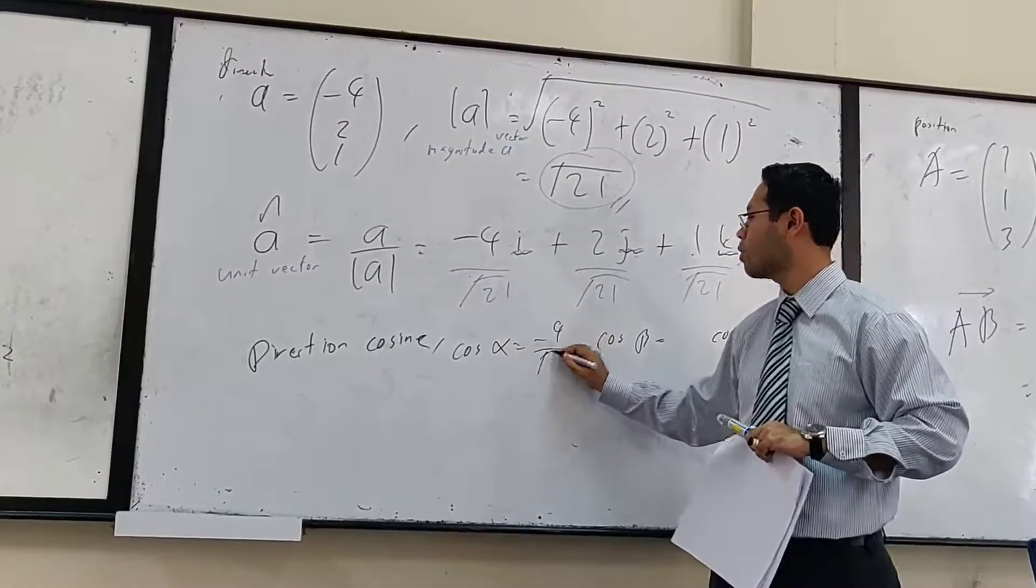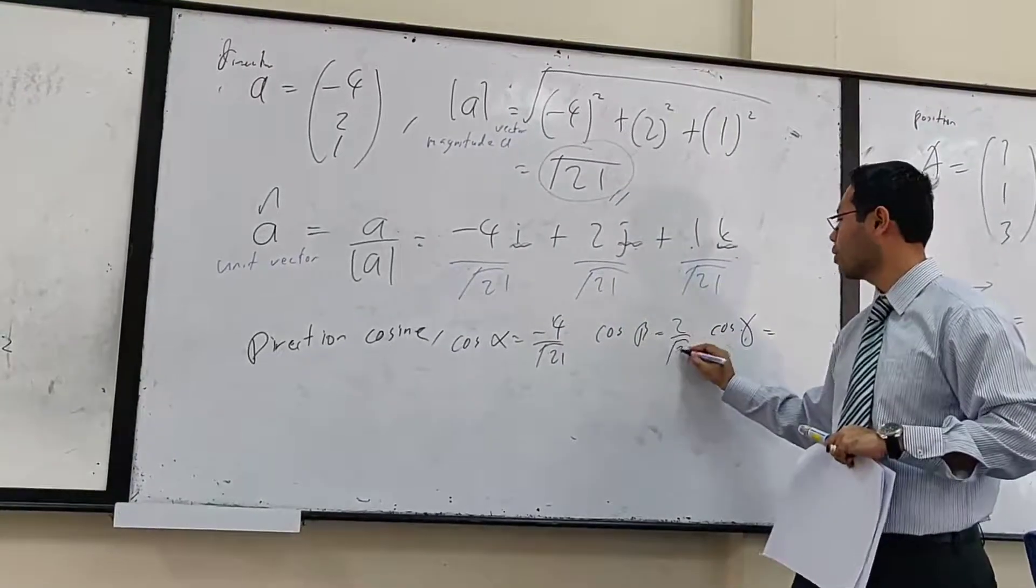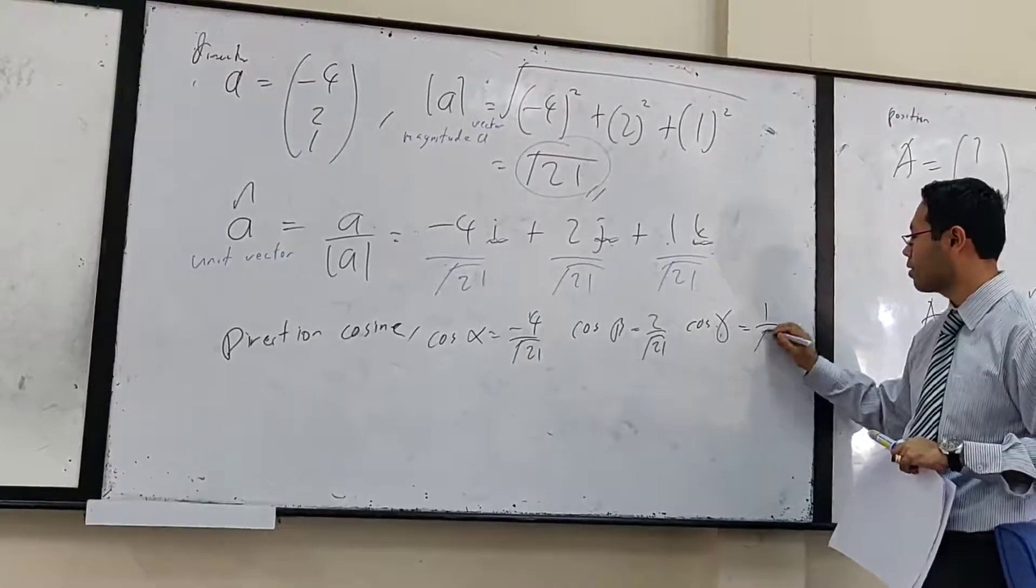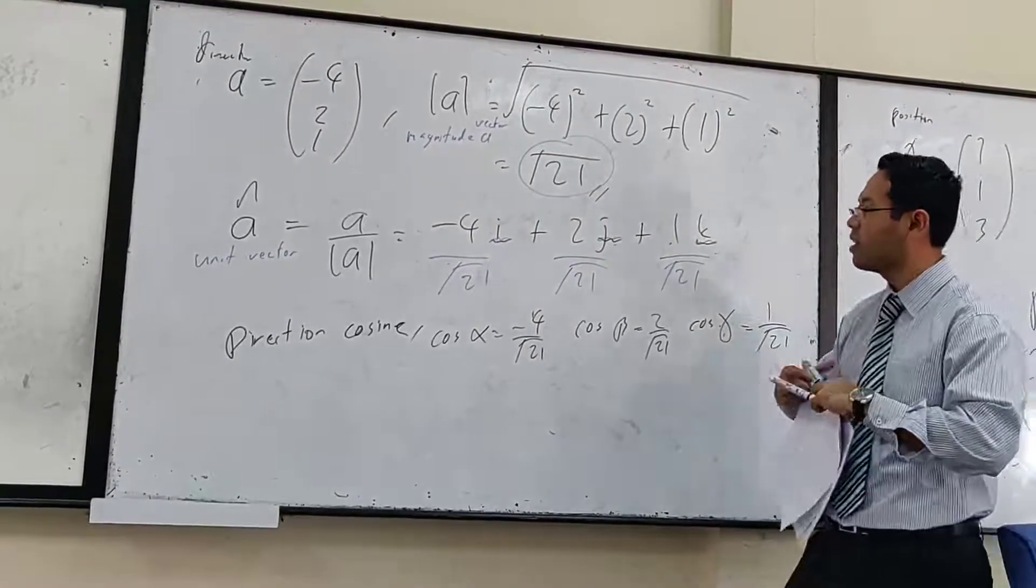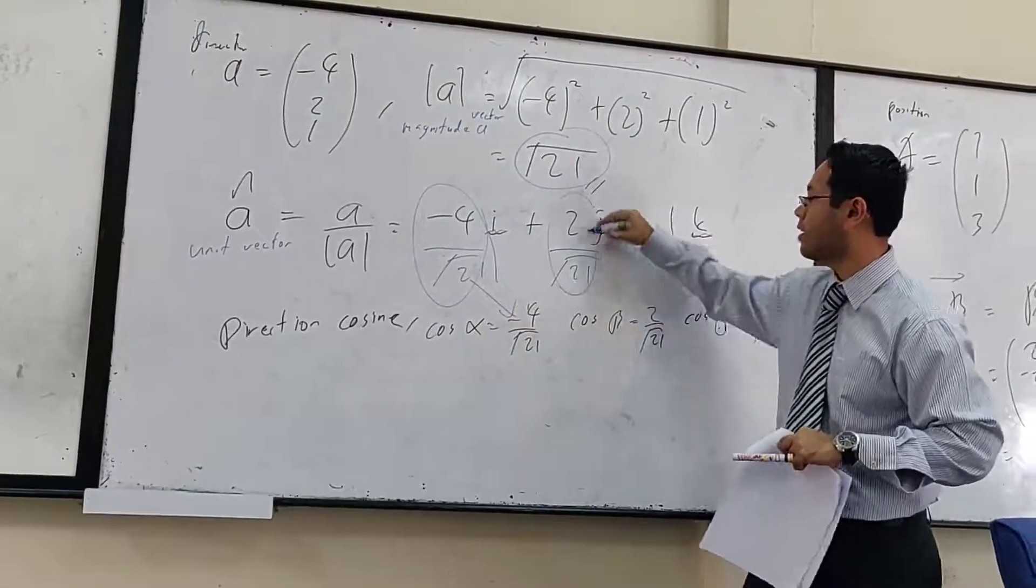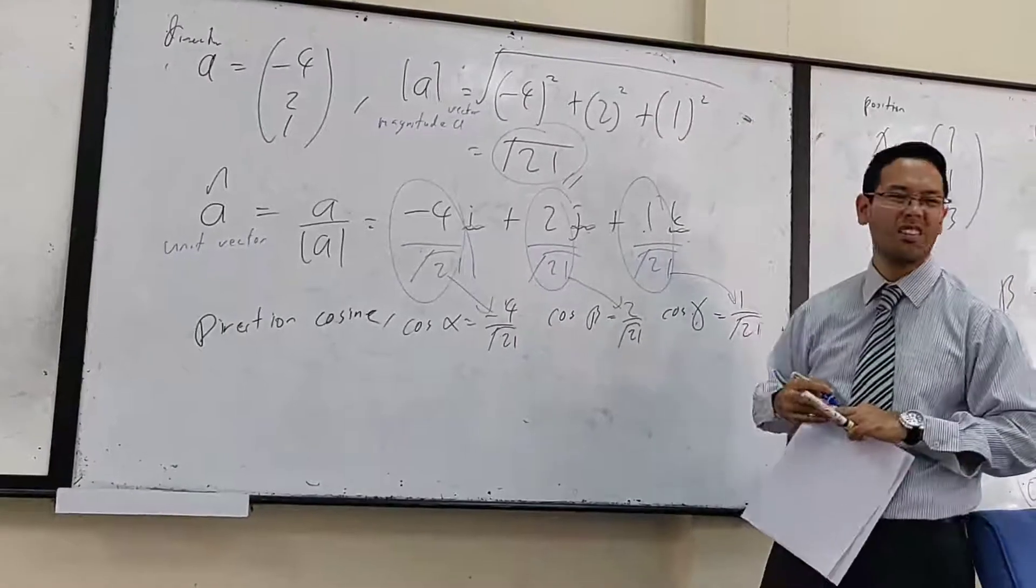Negative 4 over square root 21, 2 over square root 21, here 1 over square root 21. Just bring it down without the i, j, and k.